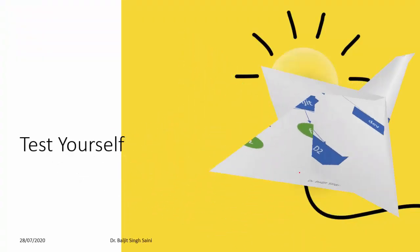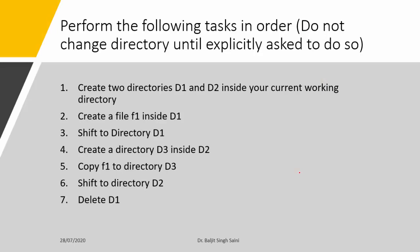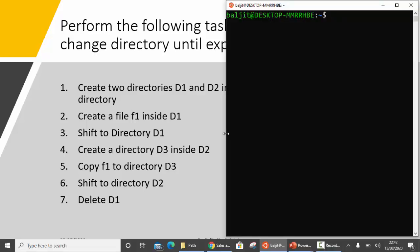So that's all about how to use relative path and absolute path. Now let us test ourselves by answering a few questions. Here is a list of tasks to perform in order. Do remember: do not change the directory until explicitly asked to do so. The first task is to create two directories d1 and d2 in your current working directory.